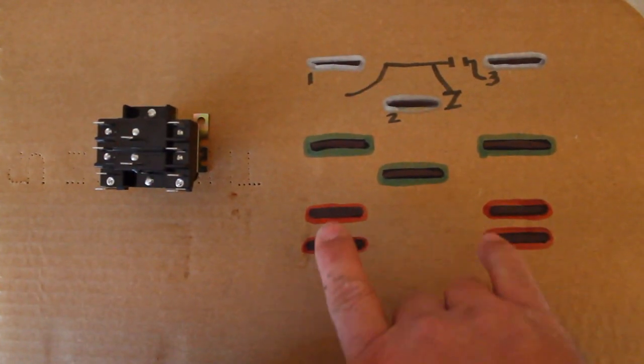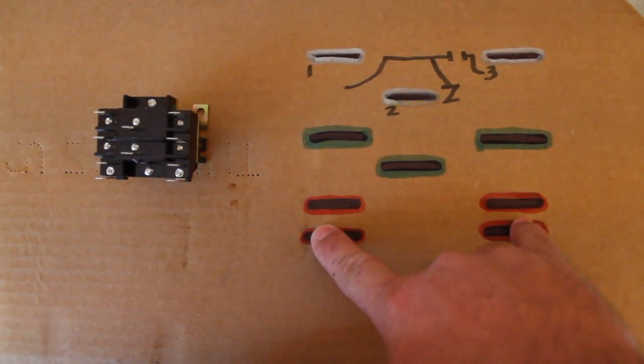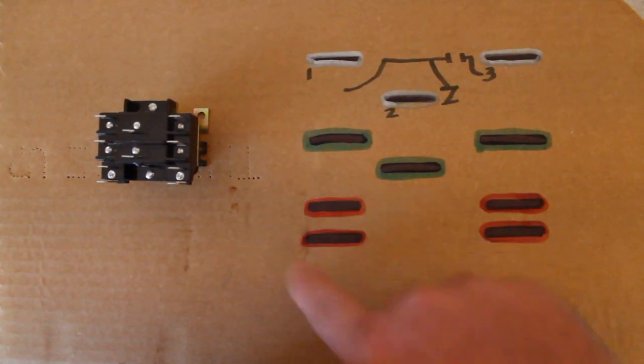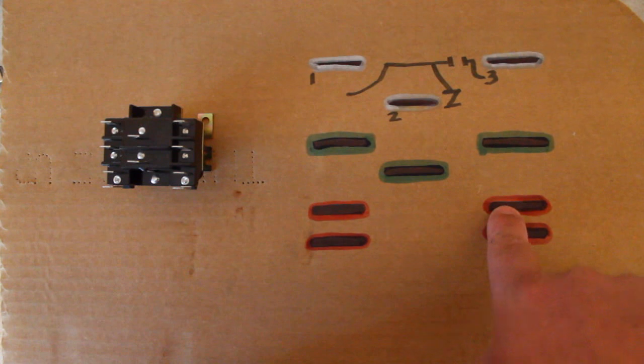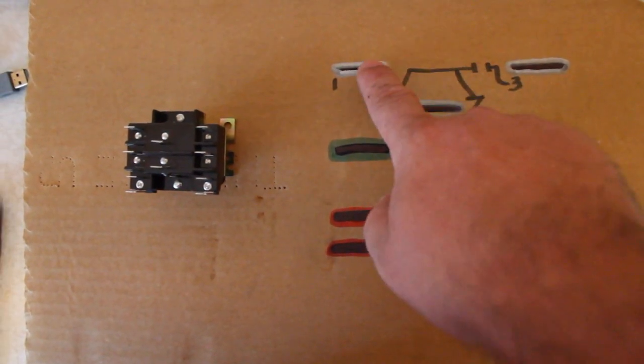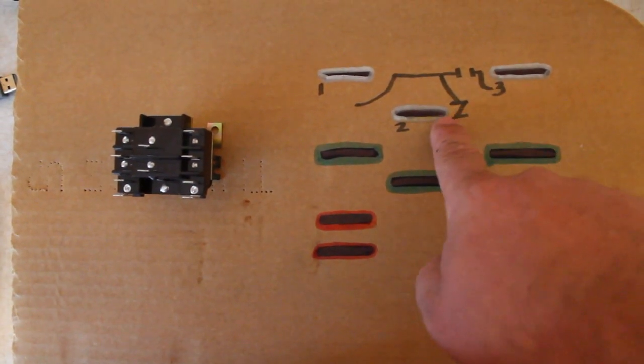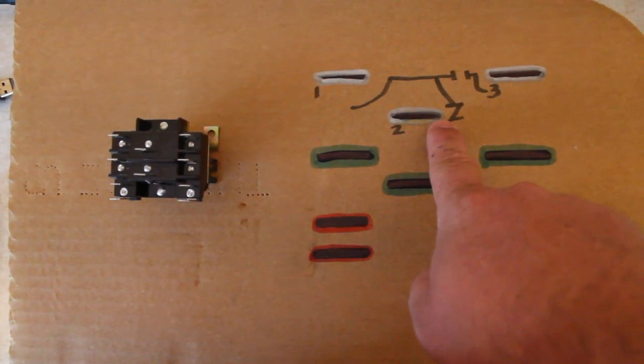What happens when there is voltage applied to the coil? We have our common and hot flowing into each side here. One side is common, the other side is hot. This normally open switch closes and voltage flows from one to three. And the normally closed switch will open.